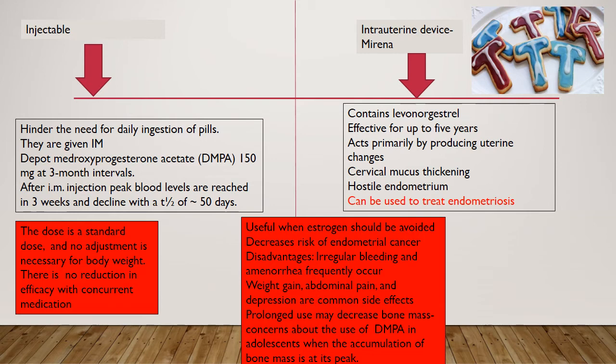The intrauterine Mirena device contains levonorgestrel, effective for up to 5 years, and acts primarily by producing uterine changes, cervical mucus thickening, and a hostile endometrium. It can also be used to treat endometriosis. These progestogen-only methods are useful when estrogen should be avoided, decreasing the risk of endometrial cancer. However, irregular bleeding and amenorrhoea occur in 75% of patients. Common side effects include weight gain of up to 6 kg in young obese females, abdominal pain, and depression. Prolonged use may decrease bone mass, which is a concern in adolescents.